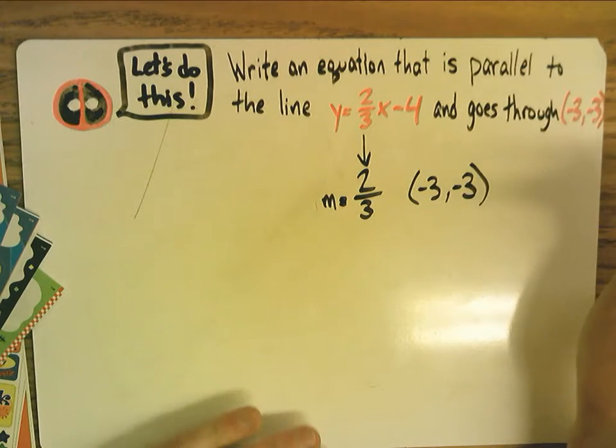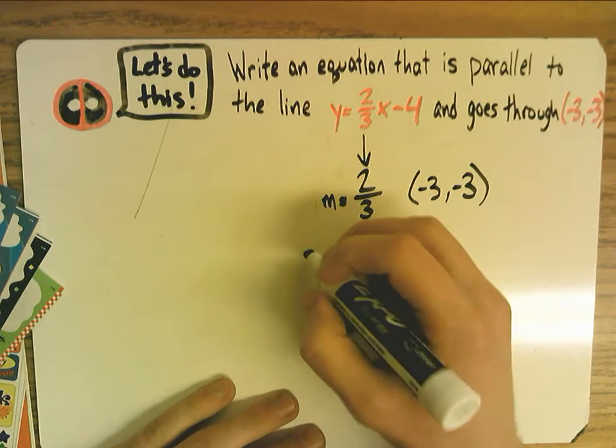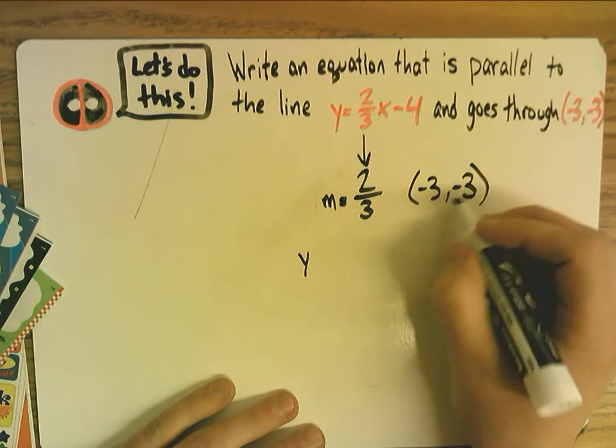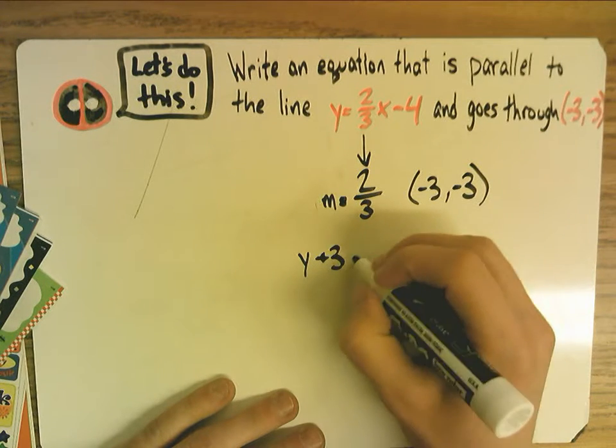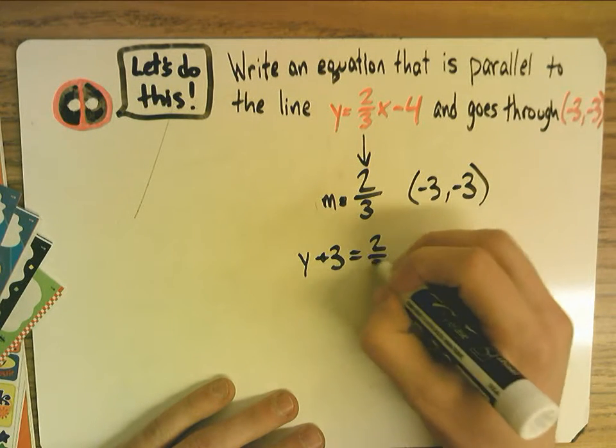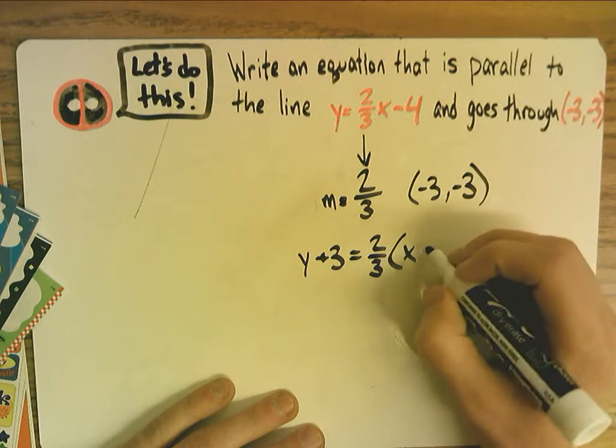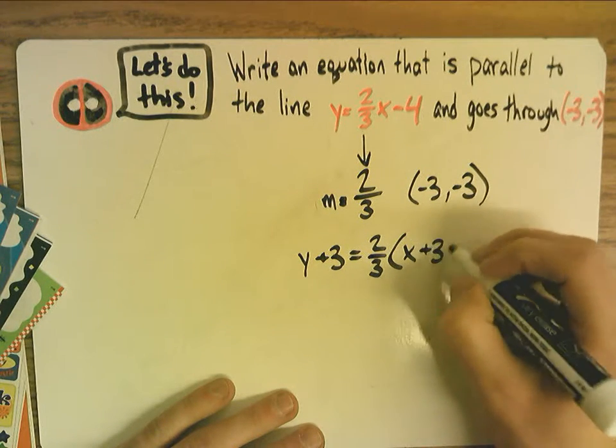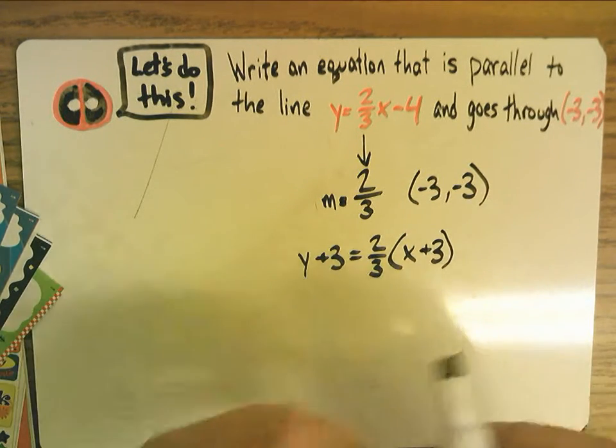So we're going to put it into point-slope form. All right, so you remember the point-slope form is y minus y1, so it would be plus three, equals our slope, two-thirds. And then x minus x1, in this case it's negative three, so it becomes plus three. Okay, so this is point-slope form.